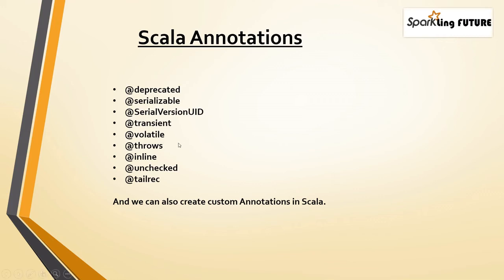@volatile is used to mark a field which can change its value outside the control of the program. If you want that value to be allowed to change, you can say @volatile followed by the variable name. For @throws — for throwing any exception from the class level, you mention @throws for a method, which explicitly tells the compiler that these exceptions are being thrown, and you don't have to mention them again in the code.